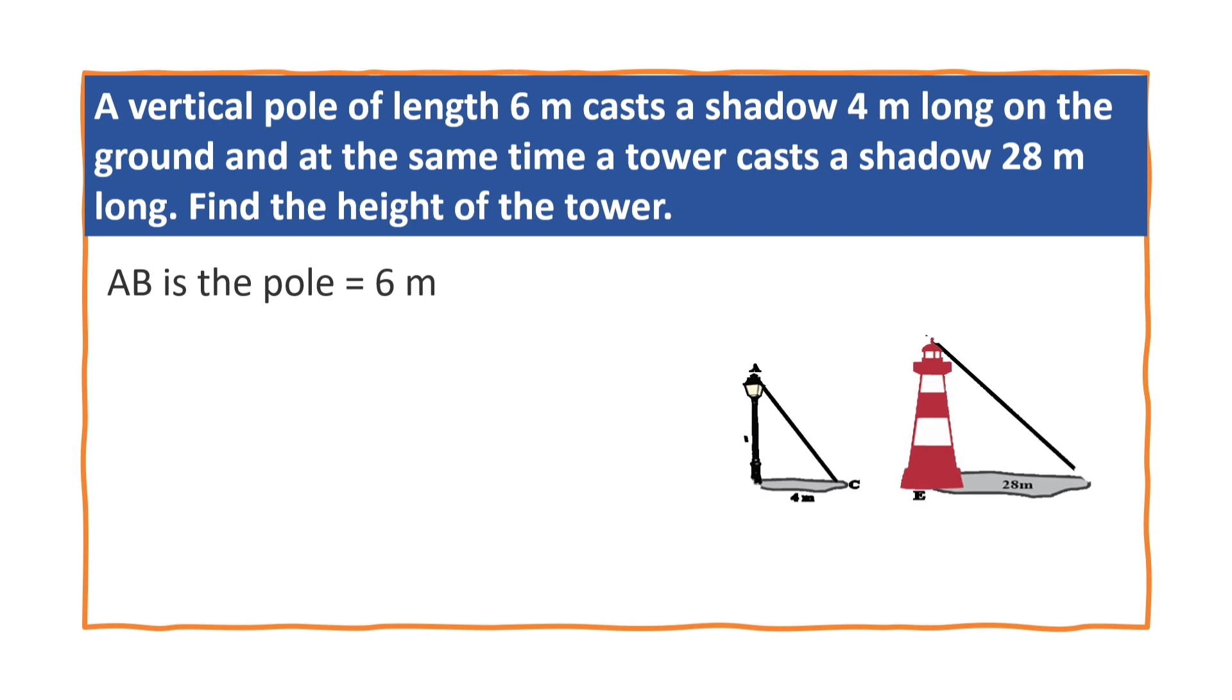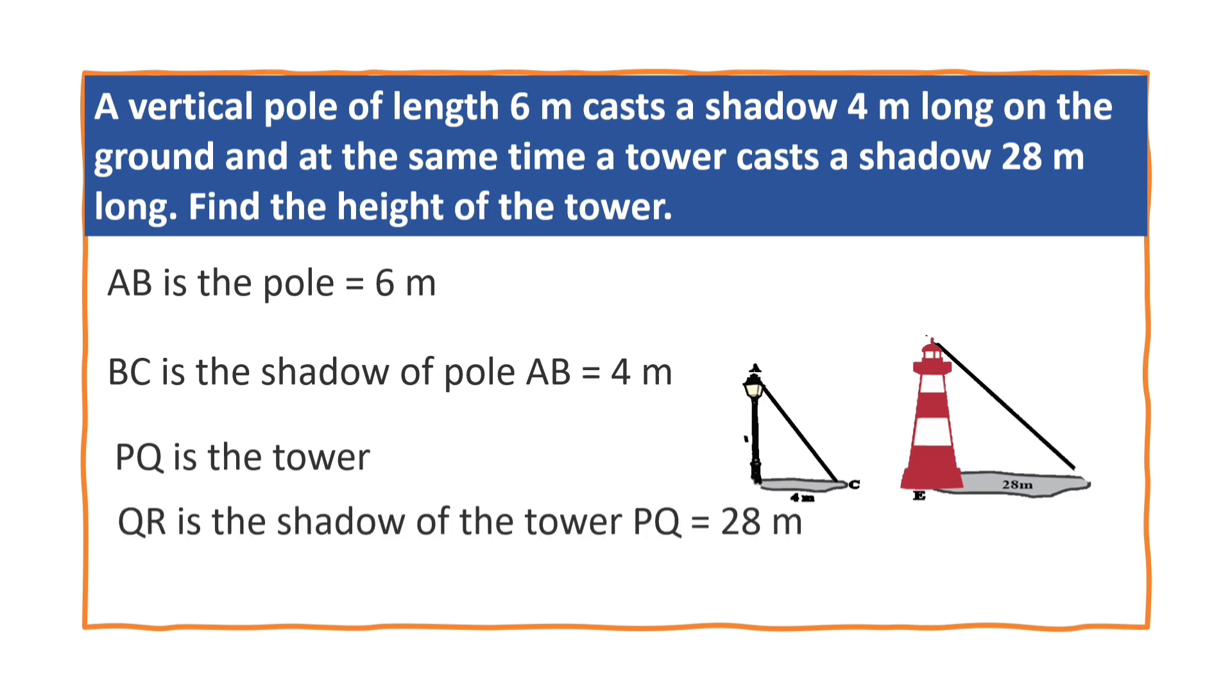So let AB be the pole. Its height is 6m. BC is the shadow of the pole AB, that is 4m. PQ is the tower. Now we are also given that QR is the shadow of the tower PQ, that is 28m.